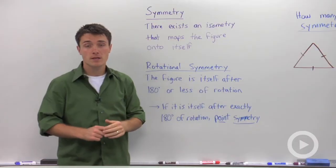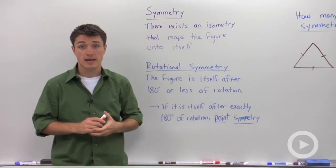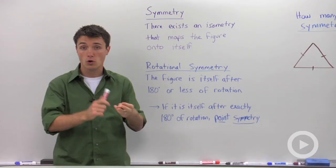Well, an isometry, remember, is a rigid transformation. That is, a translation, a rotation, or a reflection.